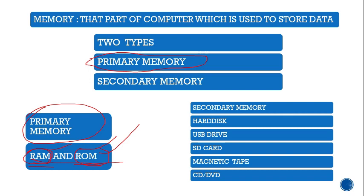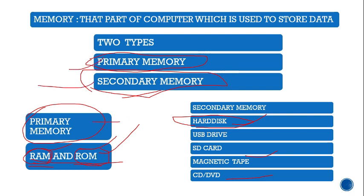Secondary memory is any memory used to store data permanently. It is also non-volatile — it does not need electricity to store data. Types of secondary memory include hard disks, pen drives, USB drives, SD cards, magnetic tapes, CDs, and DVDs. Even if a disk is inside the computer, it is called secondary memory because it stores data permanently without needing electricity.